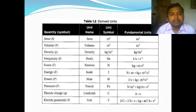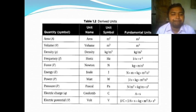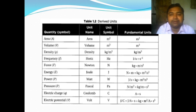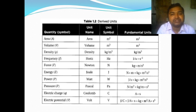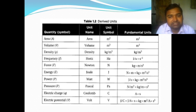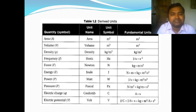Now let's look at derived units. Derived quantities include area, volume, density, frequency, force, energy, power, pressure, electric charge, and electric potential difference. For example, area is meter squared (m²), volume is meter cubed (m³) — because the formula for volume is length × breadth × height, so the fundamental unit becomes meter cubed. Please note these in your copy.